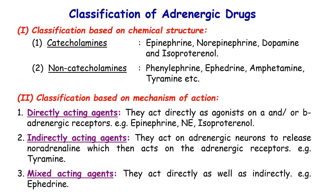One way to classify adrenergic drugs is based on their chemical structure. We have those considered to be catecholamines, which includes epinephrine, norepinephrine, dopamine, and isoproterenol. Epinephrine, norepinephrine, and dopamine are endogenous, while isoproterenol is synthetic. We also have non-catecholamines, which includes phenylephrine, ephedrine, amphetamine, tyramine, and others.